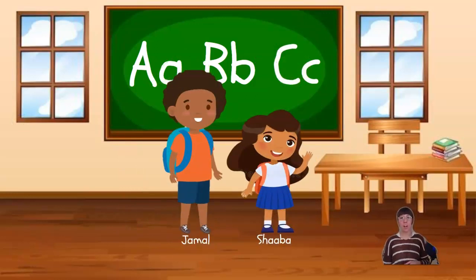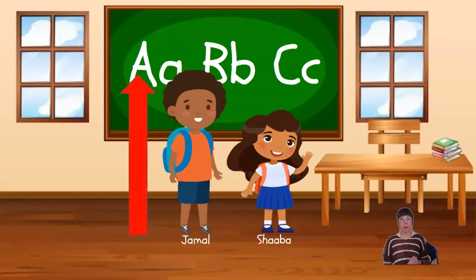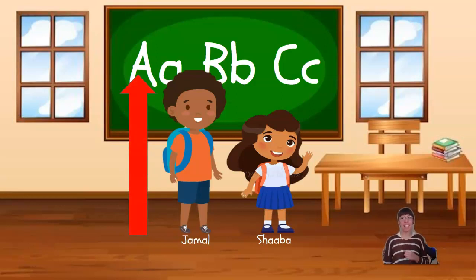Now let's look at Jamal and Shaba. We're going to measure Jamal and Shaba the same way that we measured Nick and Kira. First, let's measure Jamal. We'll start at the bottom of his feet and measure the distance to the top of his head. We can see that height with the red arrow.